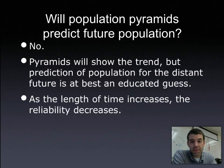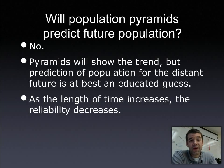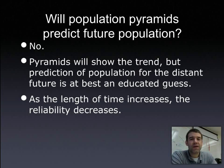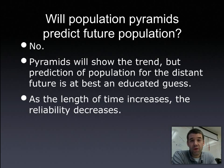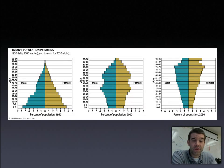We can also predict or understand the future with population pyramids. They're not perfect — they don't predict it definitively, but they show trends. Governments, economists, and geographers are very interested in understanding where a country or population is headed to best deal with resource issues, scarcity, and the needs of a population as it changes. The further out we go, the more unpredictable it becomes as more variables are introduced.